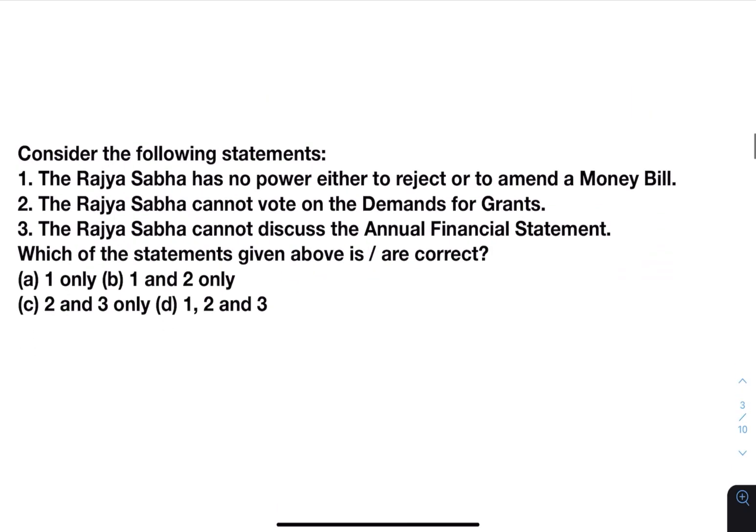Next, consider the following statements. Statement 1: the Rajya Sabha has no power either to reject or to amend a money bill — True, as we just learned. Statement 2: the Rajya Sabha cannot vote on the demand for grants — this is also true. Rajya Sabha can discuss the demands for grants but cannot vote on them.